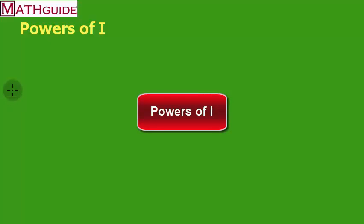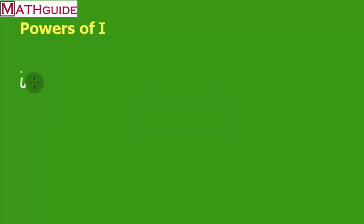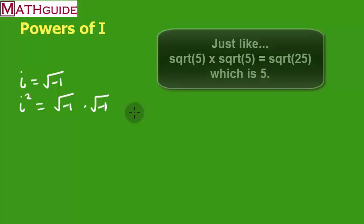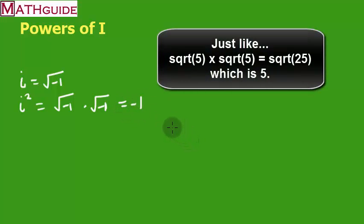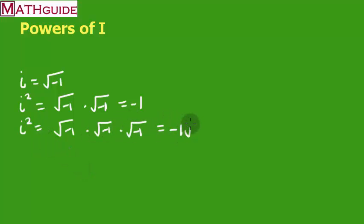Now let's talk about the powers of i. We know i to the first is just plain old i — it's the square root of negative 1 by definition. i squared means the square root of negative 1 times the square root of negative 1, which gives us negative 1. For i cubed, that's negative 1 times negative 1 times negative 1 — the first two multiply to give negative 1, and negative 1 times i gives us negative i.